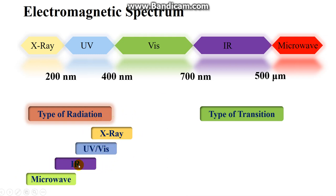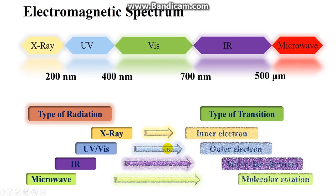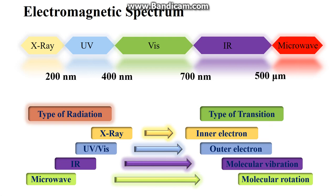The types of radiation are X-ray, UV, visible, IR, and microwave, and the corresponding types of transitions are inner electron, outer electron, molecular vibration, and molecular rotation. Because of all these phenomena you can have transitions, and whenever there is a transition there is a change in energy level. When the electron returns to the lower energy state, it gives a spectrum.